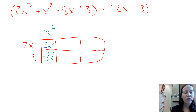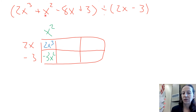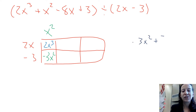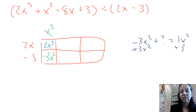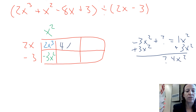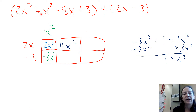Now comes the tricky part. The x squared terms are on this diagonal and they have to add up to 1x squared. You can do this in your head or as scratch work: negative 3x squared plus something has to give me 1x squared. Treating it like an equation, that something is 4x squared. We put 4x squared there because when I add those up on the diagonal, I need to get 1x squared.